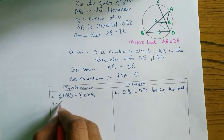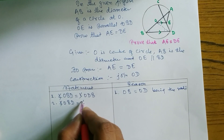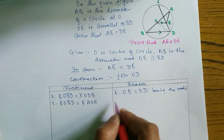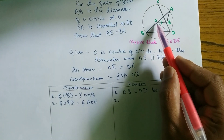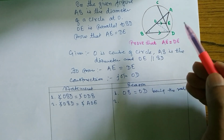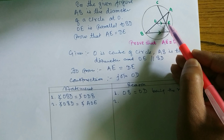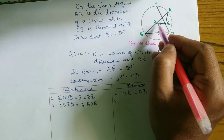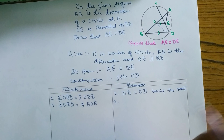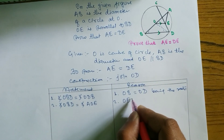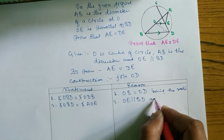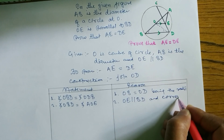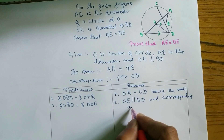Statement 2: Angle OBD is equal to angle AOE. The reason is that OE and BD are parallel, so these are corresponding angles. Being corresponding angles, OE parallel BD.